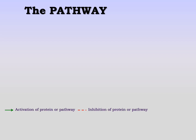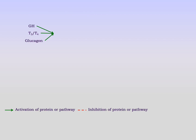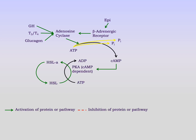Hormones such as growth hormone, thyroid hormones, glucagon, and epinephrine are all going to be activating enzyme pathways starting with adenylyl cyclase. This adenylyl cyclase produces cyclic AMP, which activates an enzyme known as PKA. PKA takes hormone-sensitive lipase (HSL) and converts it from its inactive form to its active form. If we do not stimulate hormone-sensitive lipase, we do not get a large amount of lipolysis.